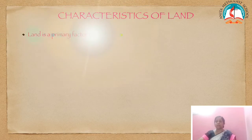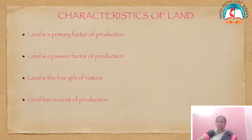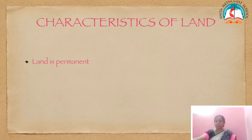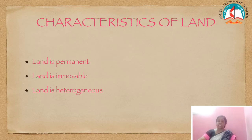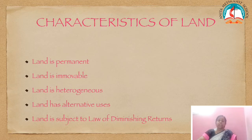Let us learn the characteristics of land. Land is a primary factor of production — it is an important factor. Land is a passive factor of production, meaning land is not an active factor. Land is a free gift of nature; it is God's creation, and it has no cost of production. Land is permanent and immoveable. Land is heterogeneous, meaning it has different kinds — it differs in fertility; one land will give more fertility and another may give less. Land has alternative uses; we can use it for many purposes. Finally, land is subject to the law of diminishing returns — when land is used continuously, the returns will be diminishing.